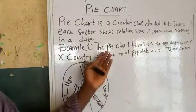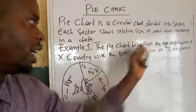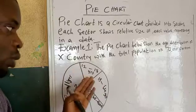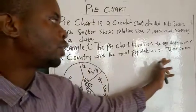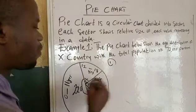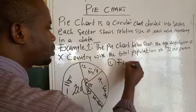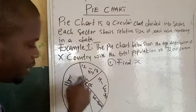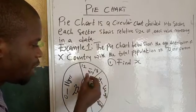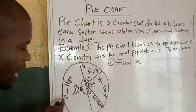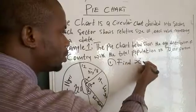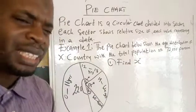Now let's look at this question. In your exams you can have a question like this: the pie chart below shows the age distribution of Country X — an imaginary, hypothetical country — with a total population of 72 persons. Question 1: find x. Looking at the data, we have 220°, 43°, 75°, and x°.